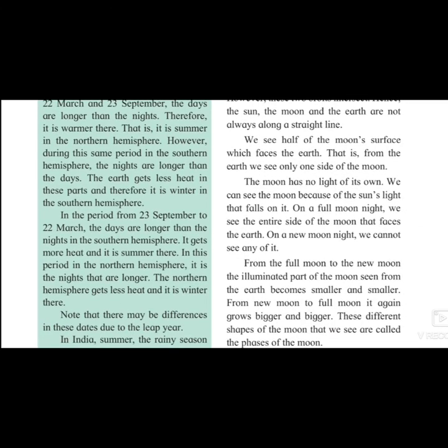In the period from 23rd September to 22nd March, the days are longer than the night in the southern hemisphere. It gets more heat and it is summer there. The northern hemisphere gets less heat and that is why it is winter. We are present in the northern hemisphere — that is why we had longer days and shorter nights, but as soon as 23rd September passes, we will face winter with shorter days and longer nights.